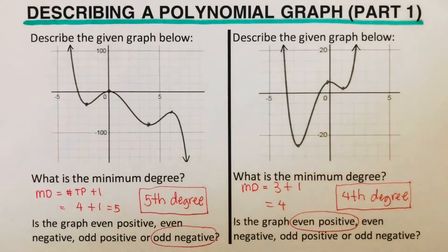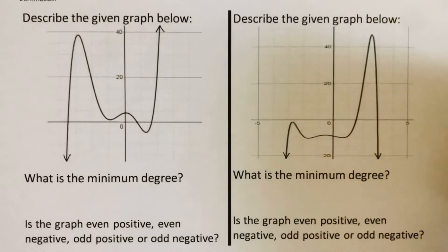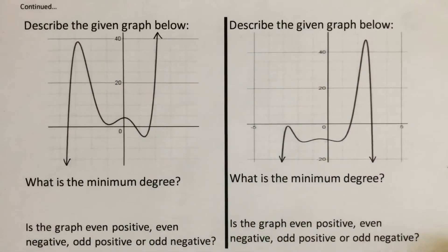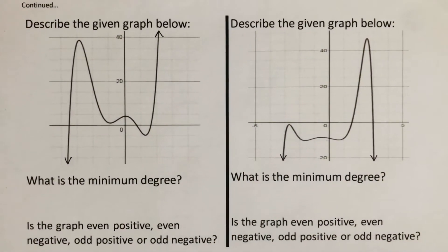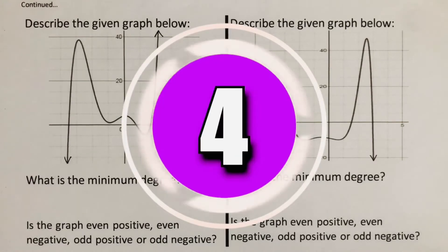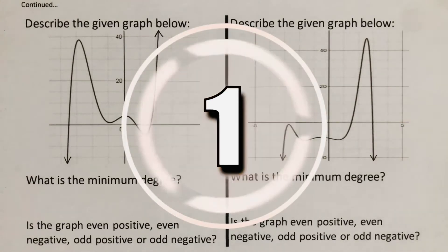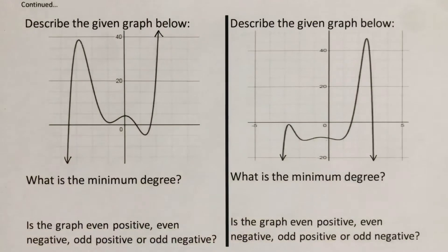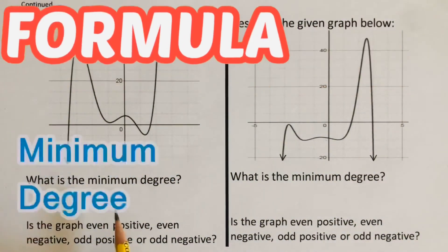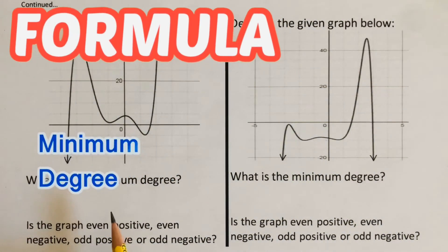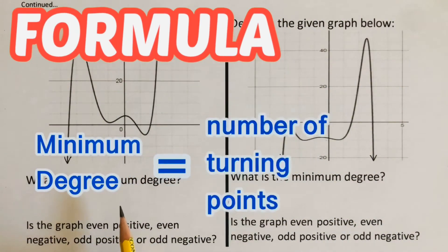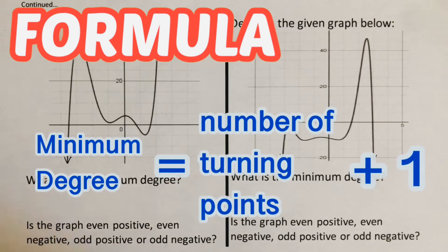Now let's move on to the next example. I would encourage you to pause this video and try this problem out on your own. When you're done, unpause it and check your answer. Okay, so we go over the problem here. Again, we determine the minimum degree. The formula for minimum degree is number of turning points plus one.